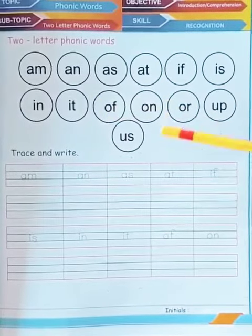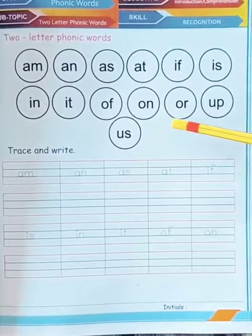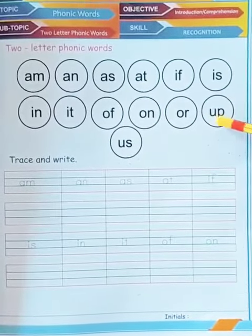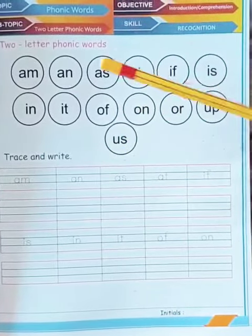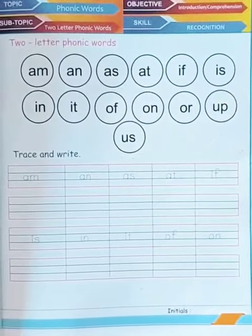O F of, O N on, O R or, U P up, U S us. These are the two letter words.